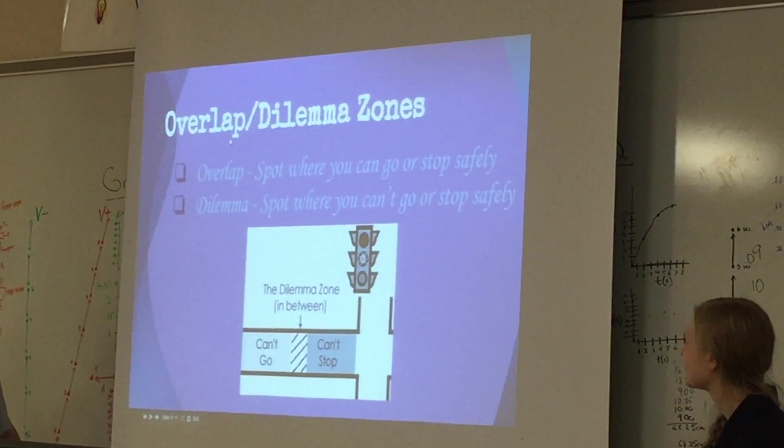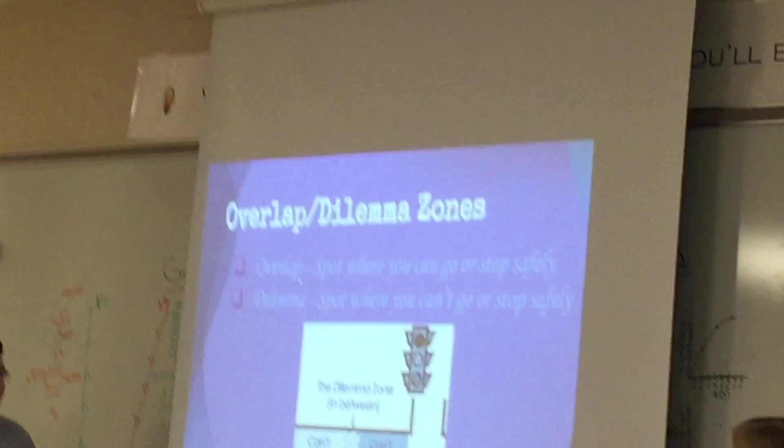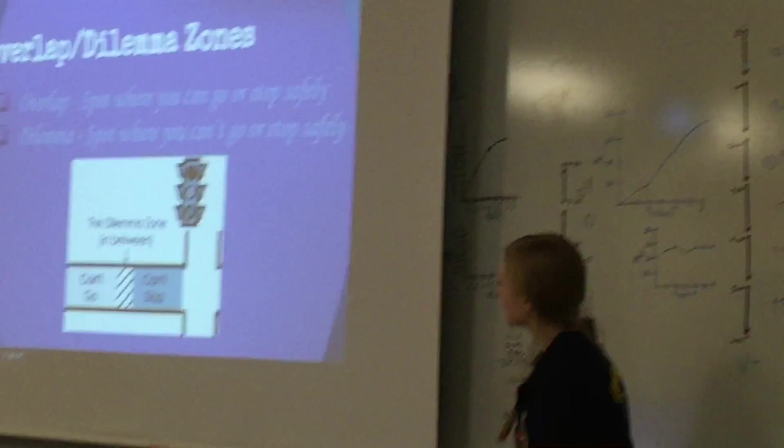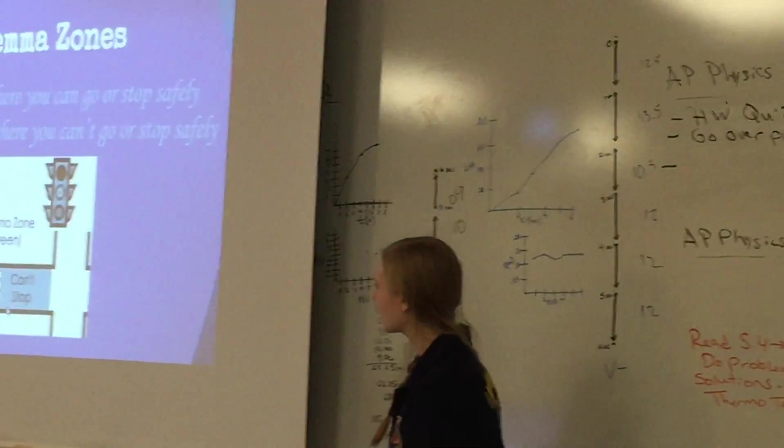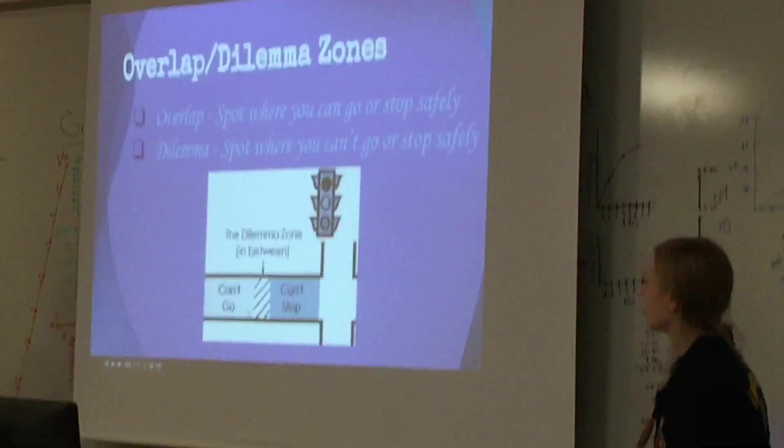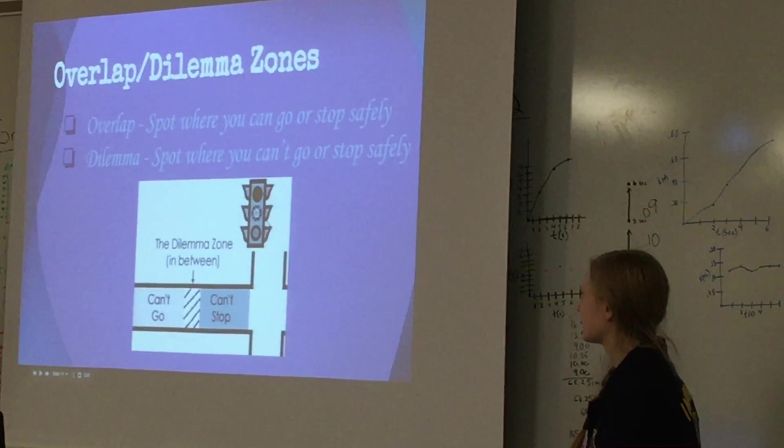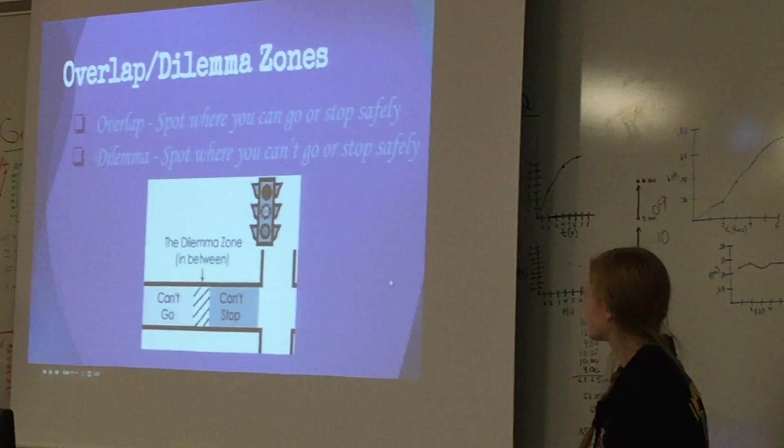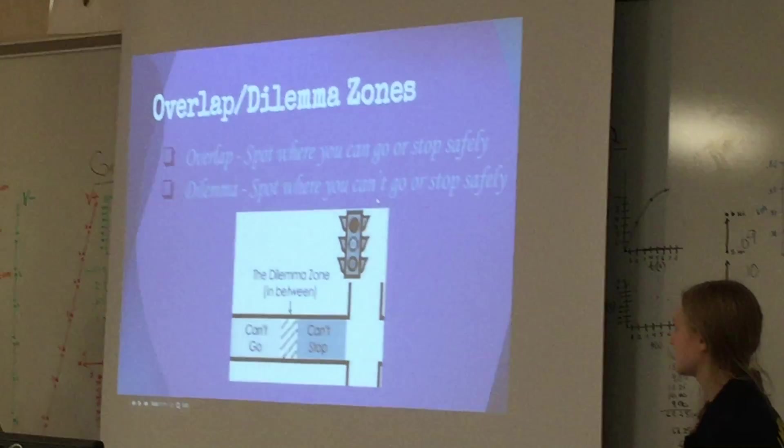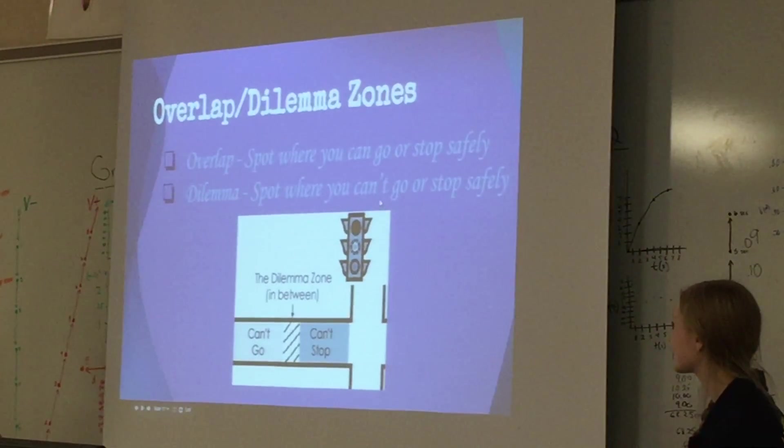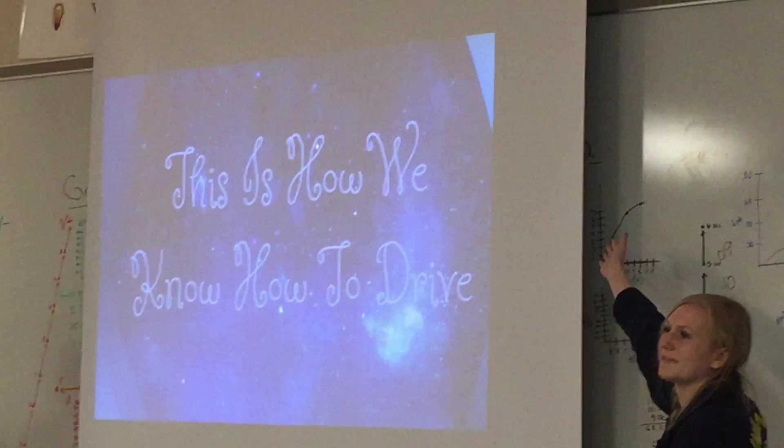Overlapping dilemma zones. When at a yellow light, there will typically be an overlap zone, which is the spot between where you should go and when you should stop, and this is where you can safely go or stop. In unsafe lights, there's the dilemma zone, which is basically the exact opposite, where you can't safely go or stop. And this is how we know how to drive.